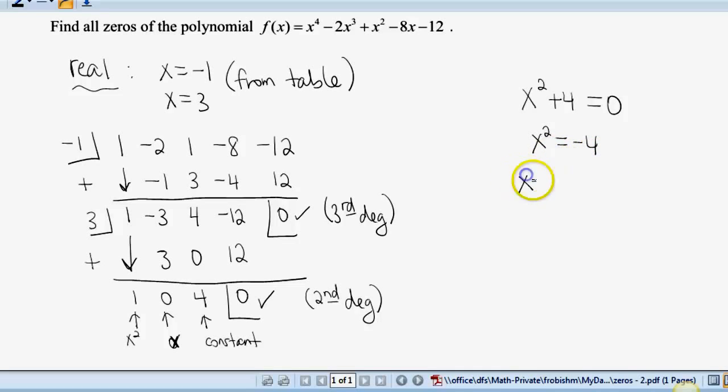Do the square root of both sides. So x equals plus or minus, don't forget about that part, square root of negative four, and sure enough, these are going to be imaginary. So x is plus or minus 2i.